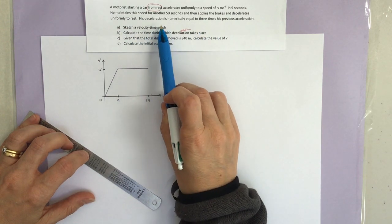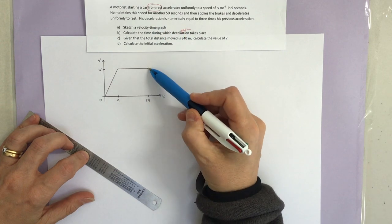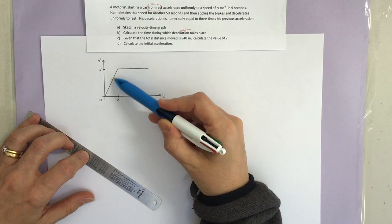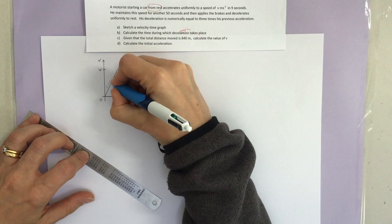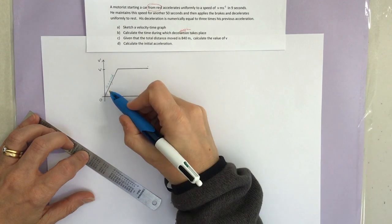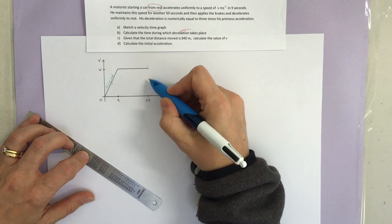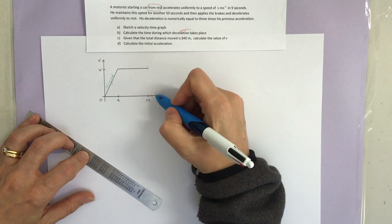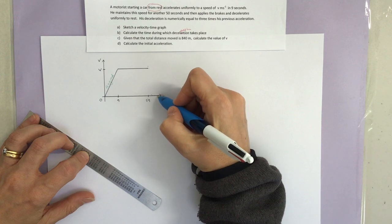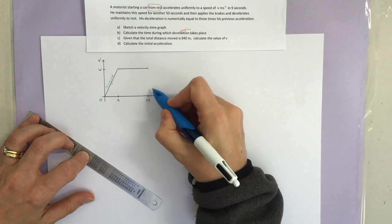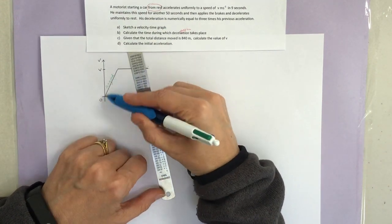Then it decelerates. The deceleration is numerically equal to three times the acceleration. It says numerically because it's deceleration, so it's not going to be the same gradient. My acceleration here, A, is equal to my gradient. But my gradient in the deceleration phase is going to be negative — so this is acceleration negative 3A — because we've got deceleration. It should be three times as steep.